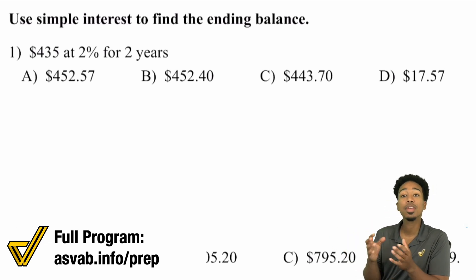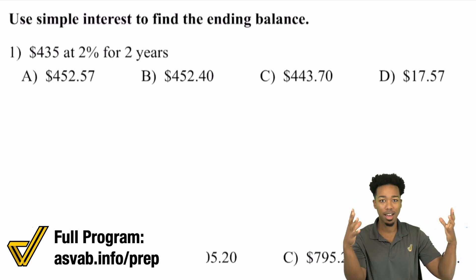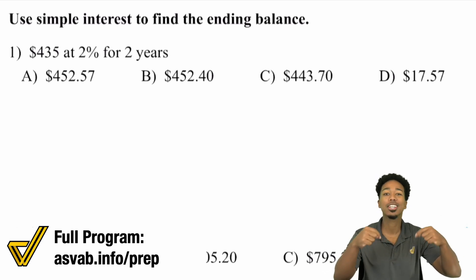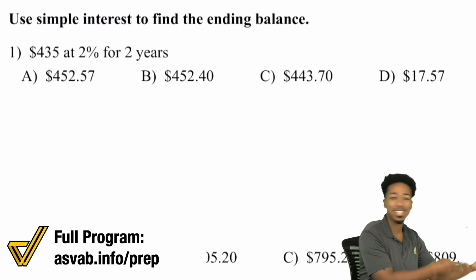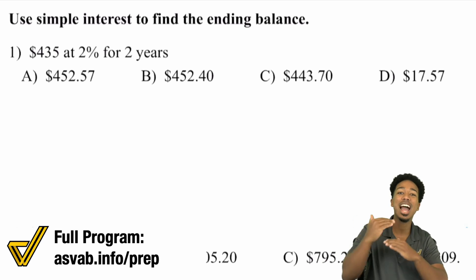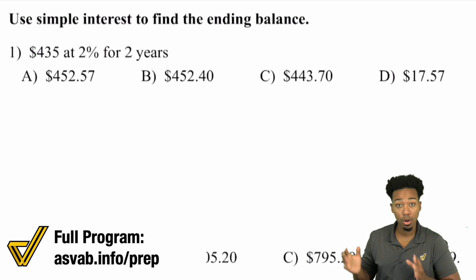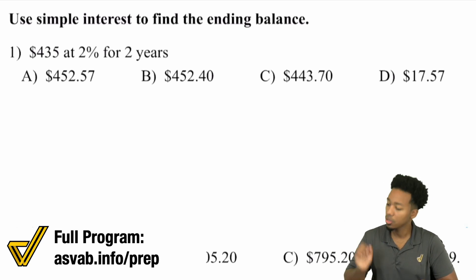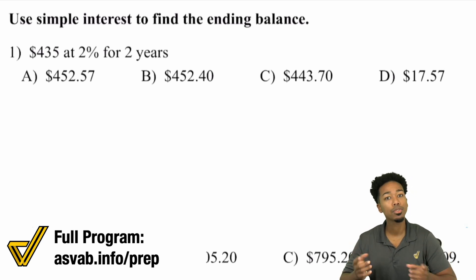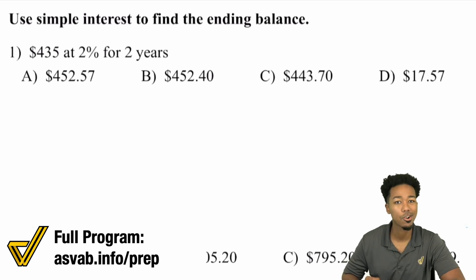Compound interest means that the money that you put in, you earn interest off of that. And then the new amount that you have — so like let's say you earn $10, now I have $1,010 — now I earn interest off of all of that. Now let's say I have $1,021, I earn interest off of that now because it stacks on top of itself. Simple interest though, it is simple. If you earn $5 in interest in year one, you'll earn $5 in year two, $5 in year three because it's simple. You're only earning off of the original amount.